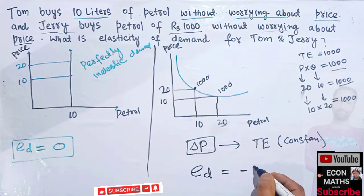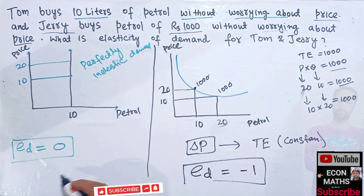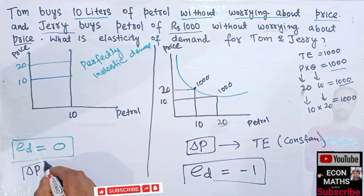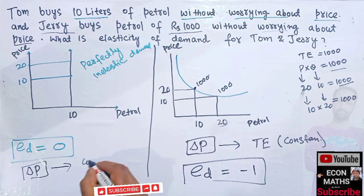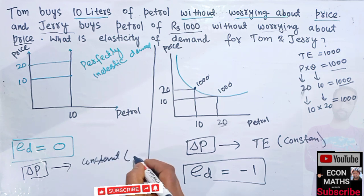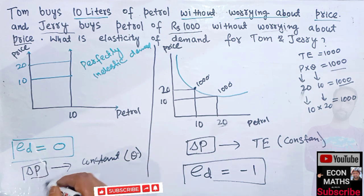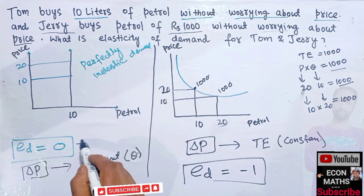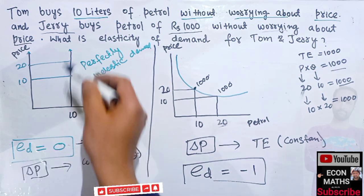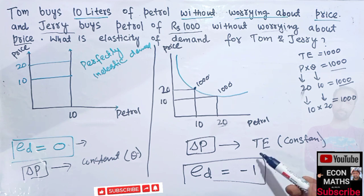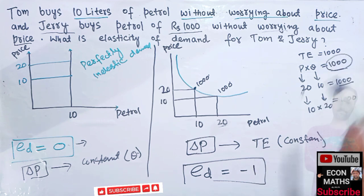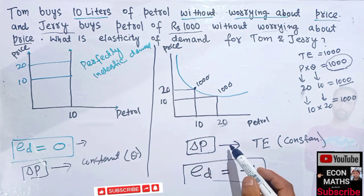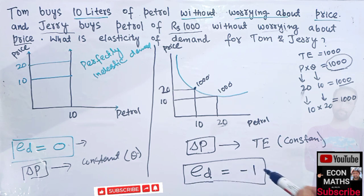In Jerry's case, elasticity of demand is minus one, and in Tom's case, elasticity of demand is zero. Any change in price leading to constant quantity demanded means perfectly inelastic demand, denoted by zero. When any change in price leads to constant total expenditure, elasticity of demand is minus one. I hope this video makes things clear — thank you.